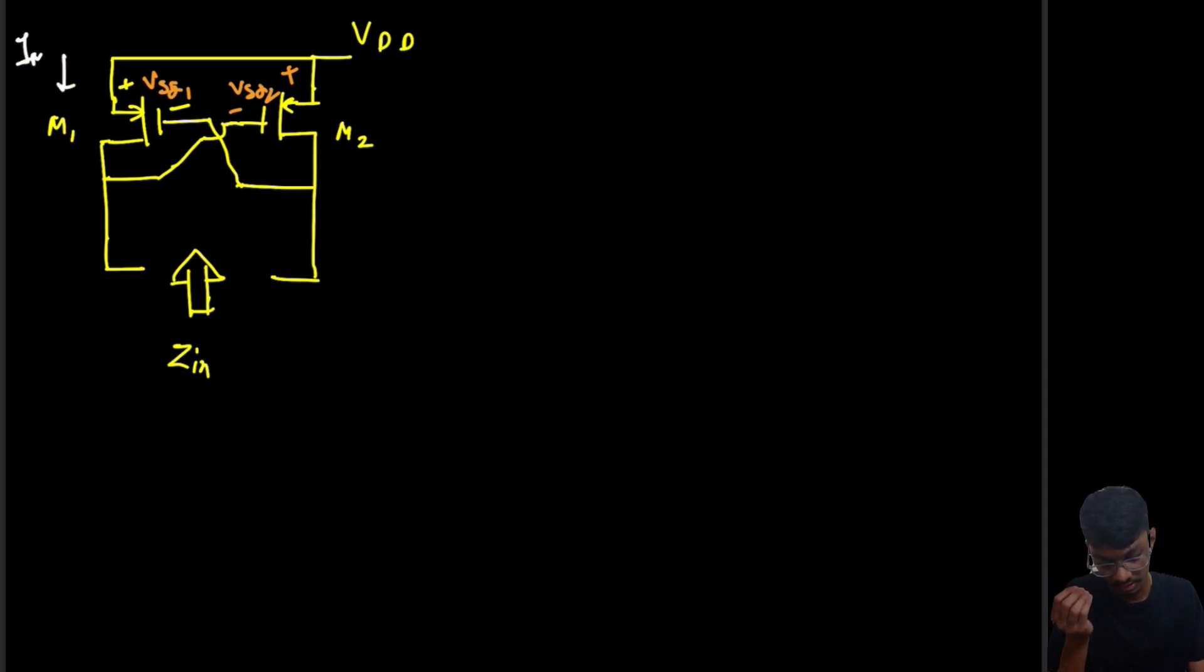Let's assume that M1 has some current flowing I_M1 and M2 has some current flowing I_M2. For calculating the input impedance, we will apply a voltage source V_x and this current is leaving, I_x.